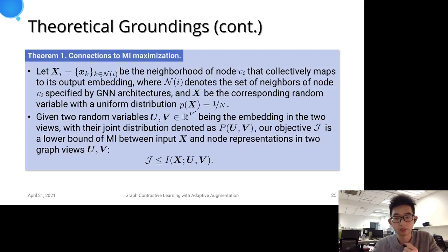Theoretically, our objective J is a lower bound of mutual information between the input x and node representations. However, since the objective is not defined specifically on the negative samples generated by the augmentation function, it remains challenging to derive the relationship between specific augmentation functions and the lower bound of mutual information, and we shall leave it as future work.